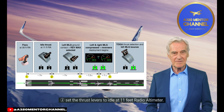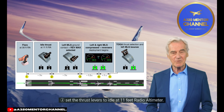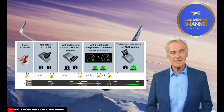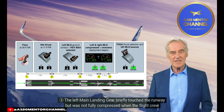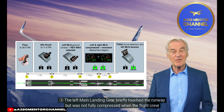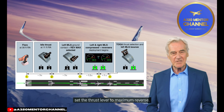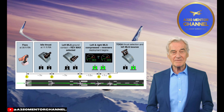Step 2: Set the thrust levers to idle at 11 feet radio altimeter. Step 3: The left main landing gear briefly touched the runway but was not fully compressed when the flight crew set the thrust lever to maximum reverse. Step 4: When both the left and right main landing gear touched the runway and were compressed, the thrust reversers began to deploy.